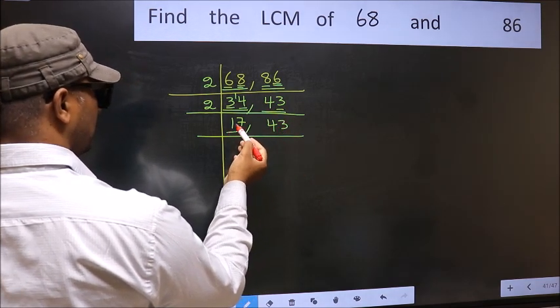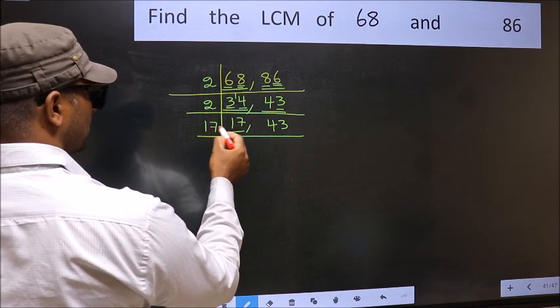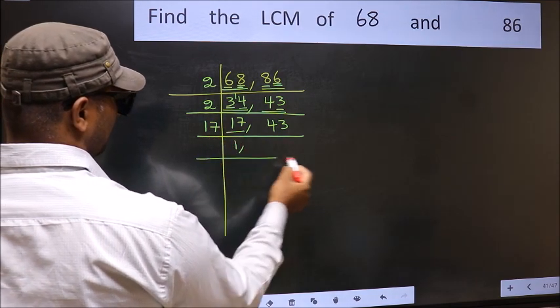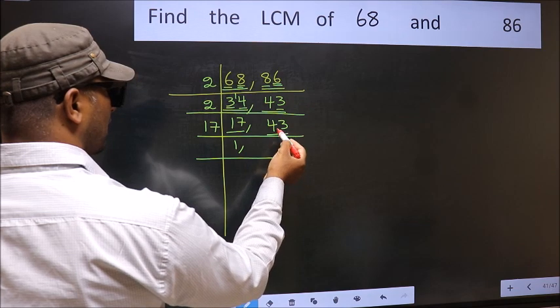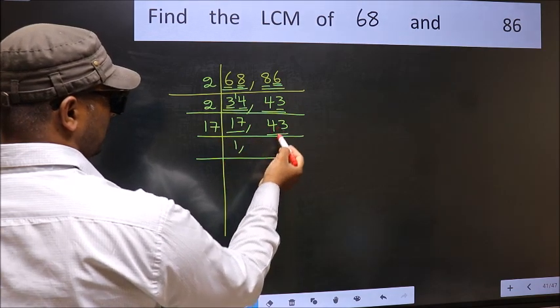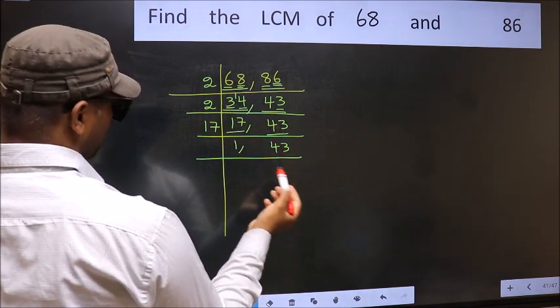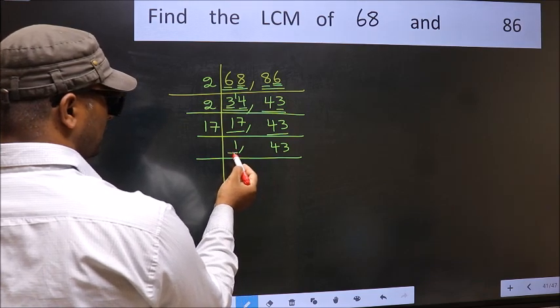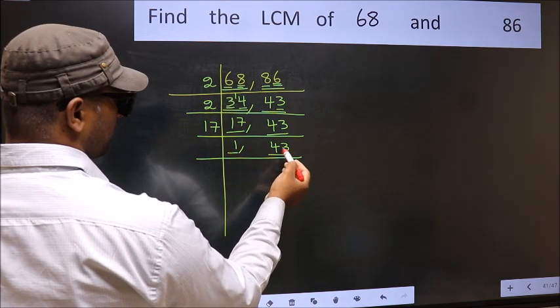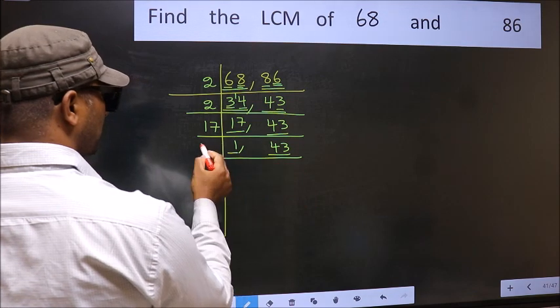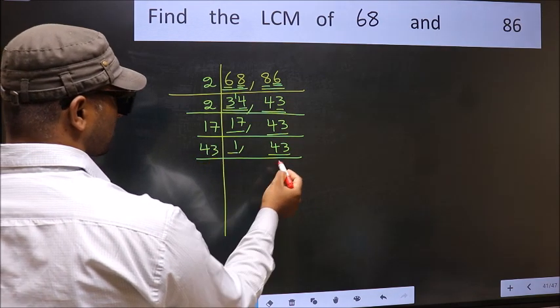Now here we have 17. 17 is a prime number, so 17 times 1 is 17. The other number 43, not divisible by 17, so write it down as it is. Now we got 1 here, so focus on the other number 43. 43 is a prime number, so 43 times 1 is 43.